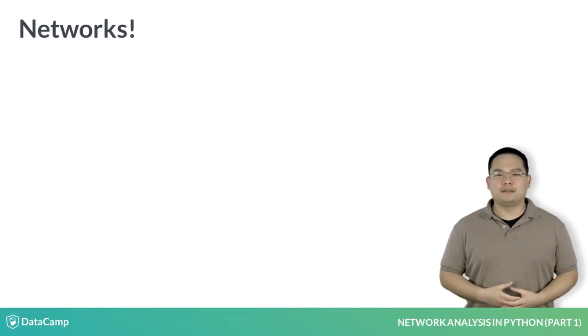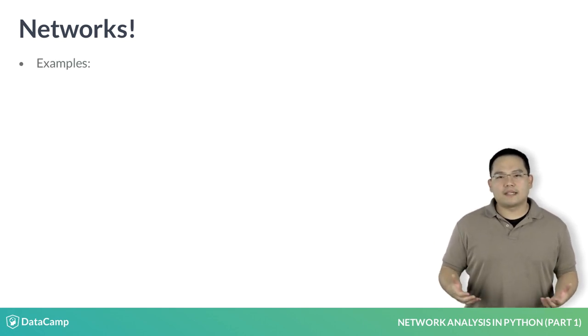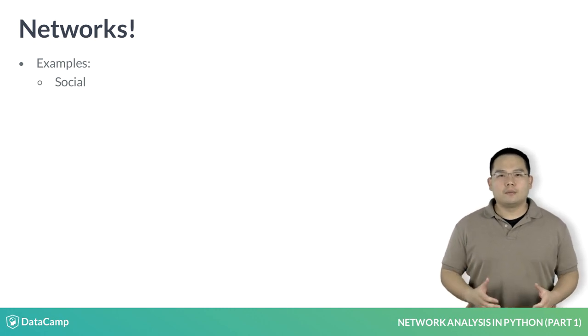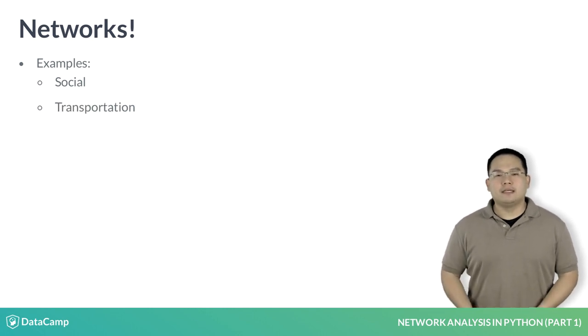Let me first ask you a question. What are some examples of networks? Well, one example might be a social network. In a social network, we're modeling the relationships between people. Here's another one, transportation networks. In a transportation network, we're modeling the connectivity between locations as determined by roads or flight paths connecting them.